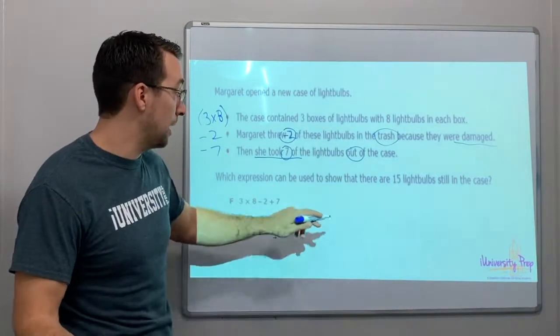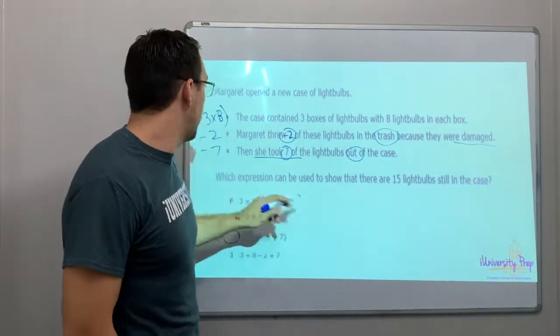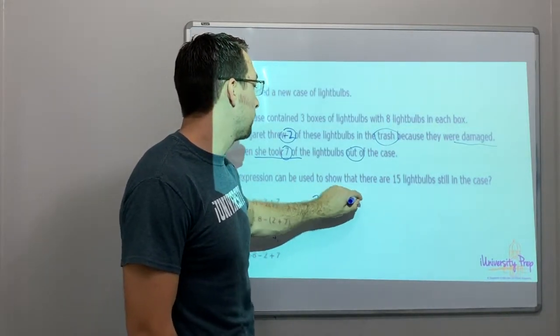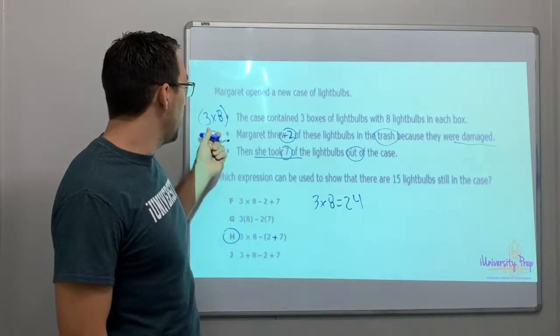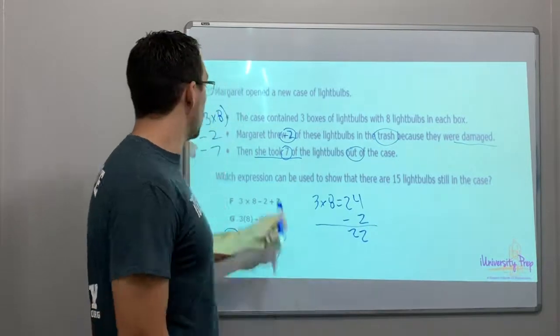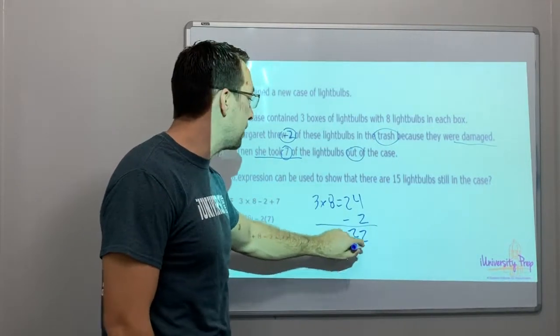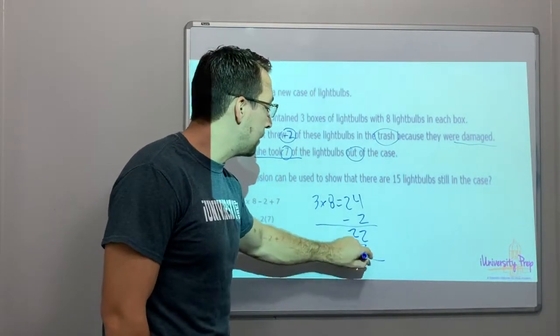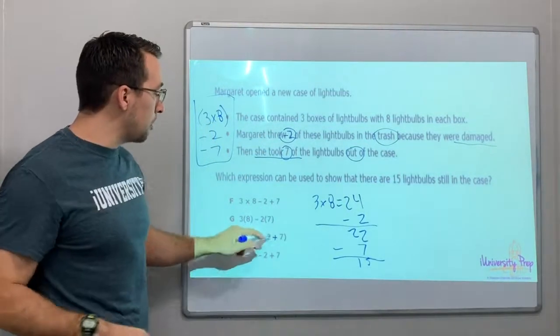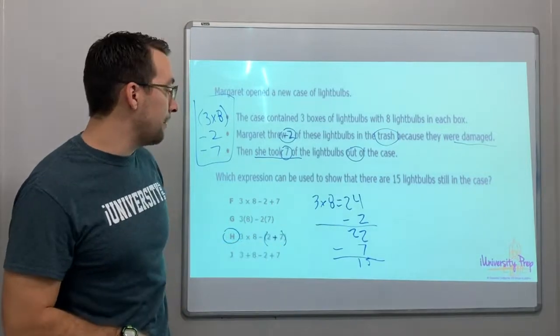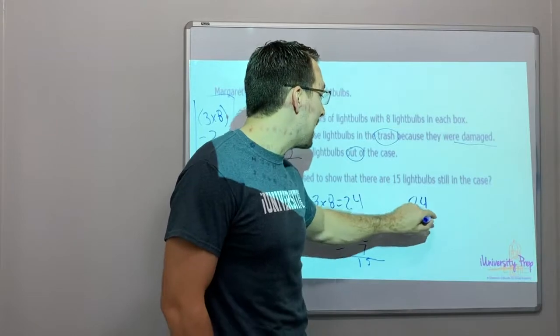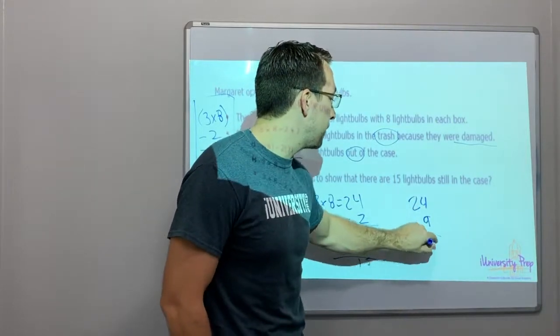Let's do this: 3 times 8 is 24, okay? 24 minus 2 equals 22. 22 minus 7 equals 15. That is what we did up here. But if we put a parenthesis around the 2 and the 7, watch this: 2 plus 7 is 9, so 24 minus 9 is 15.